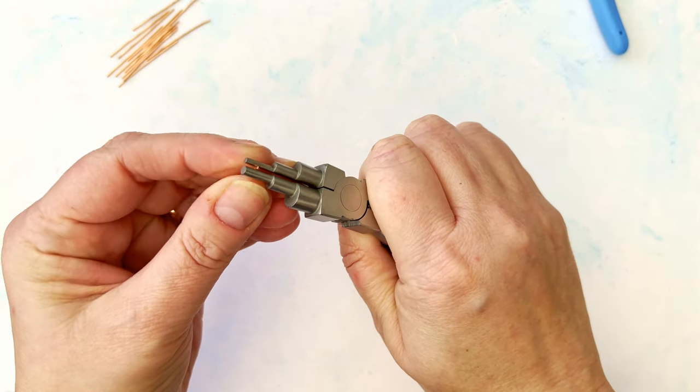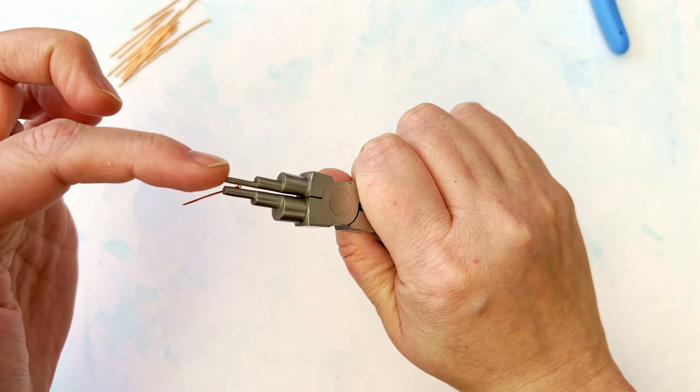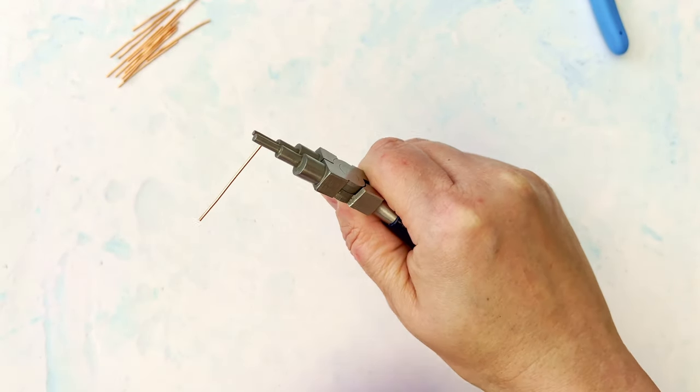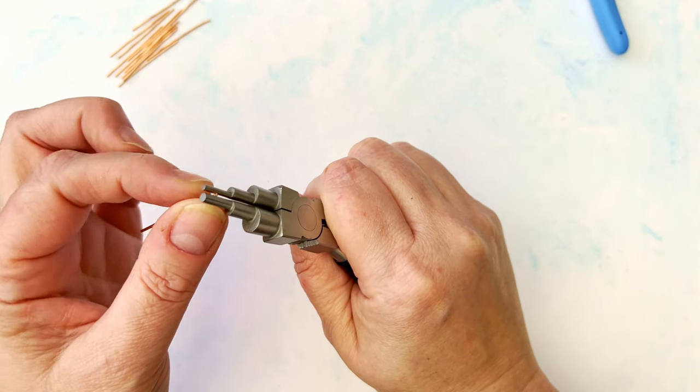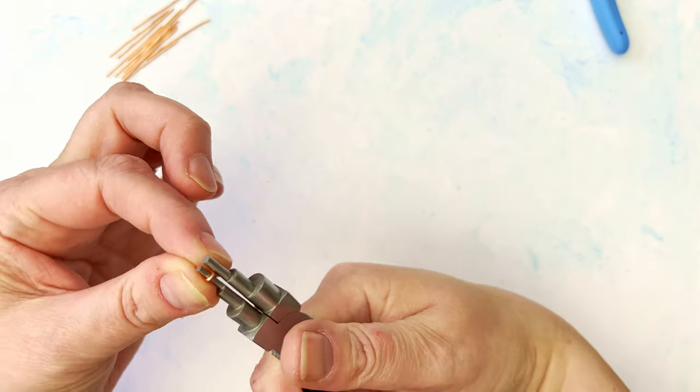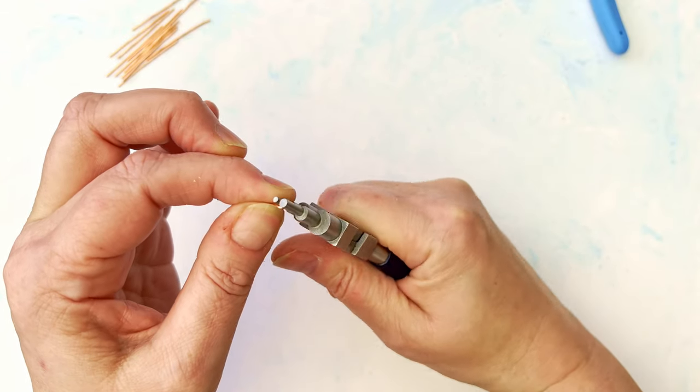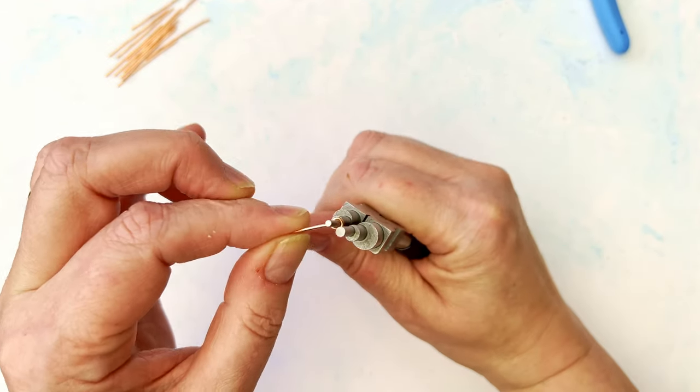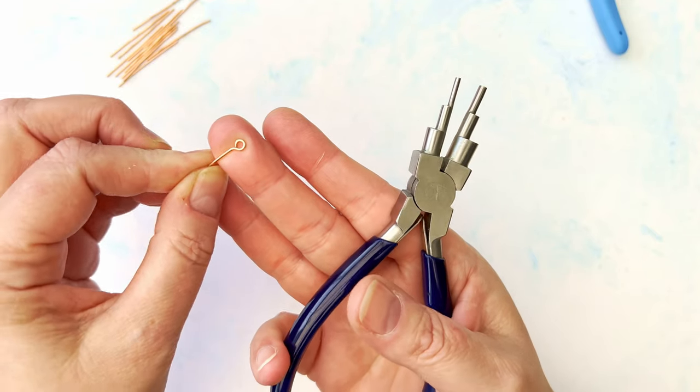We take the wire, pop it at the end of the plier, and we're going to be using the first step on this two to nine millimeter bail making plier. Wind and wrap around, and then just with your nail you want to put a little bend in it like you're making an eye pin essentially.